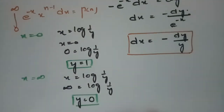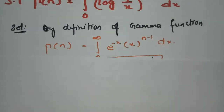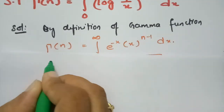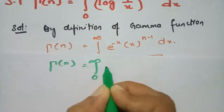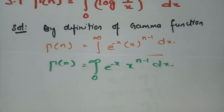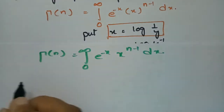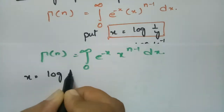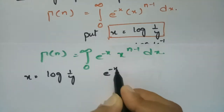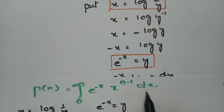Now substituting all the limits and values into the equation: gamma n is the integral from 0 to infinity of e to the power minus x times x to the power n minus 1 dx. We replace x with log(1/y), e to the power minus x with y, and dx with minus dy by y.